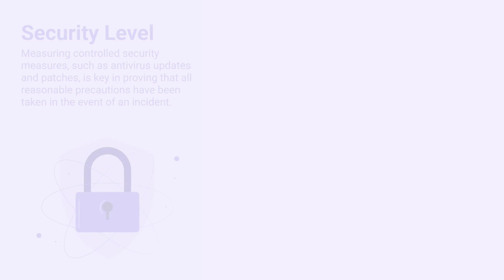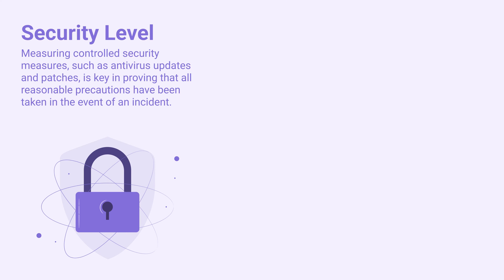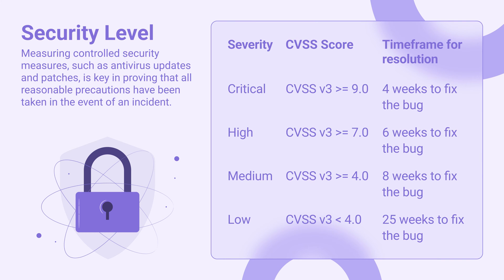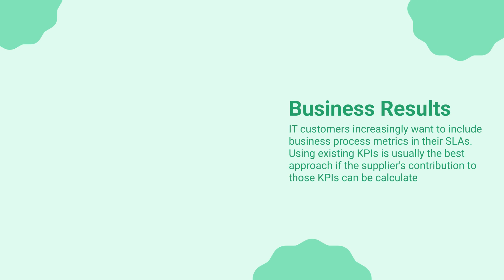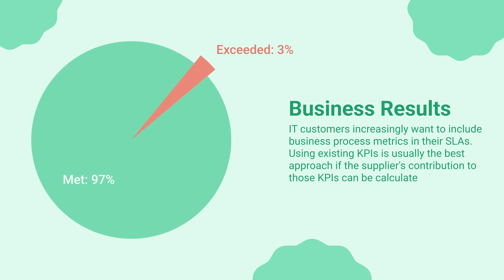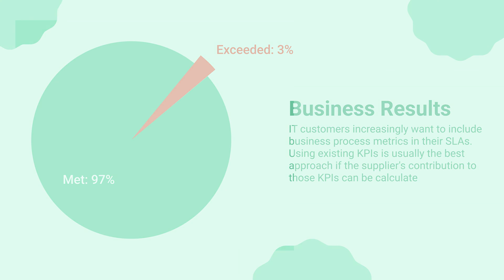Security level: measuring controlled security measures, such as antivirus updates and patches, is key in proving that all reasonable precautions have been taken in the event of an incident. Business outcomes: IT customers increasingly want to include business process metrics in their SLAs. Using existing KPIs is usually the best approach if the supplier's contribution to those KPIs can be calculated.